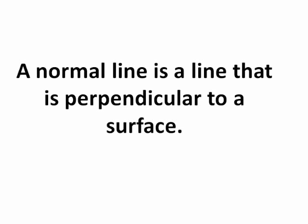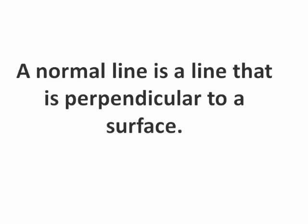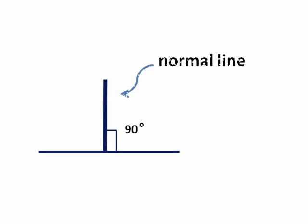And that something else is called the normal force. Here's what we mean by the normal force. A normal line is a line that is perpendicular to a surface. Here is a surface, and here is a line that is at 90 degrees or perpendicular to that surface. It is called a normal line.